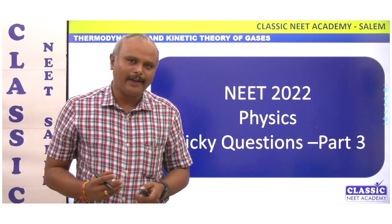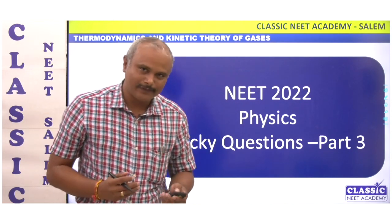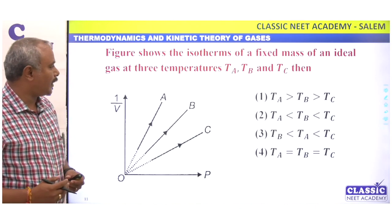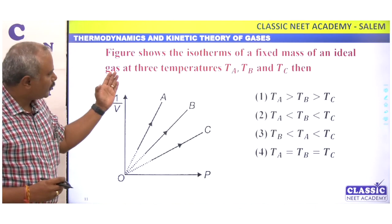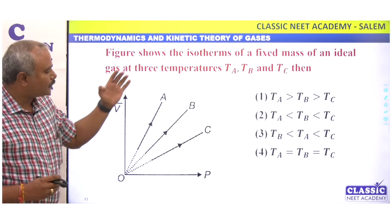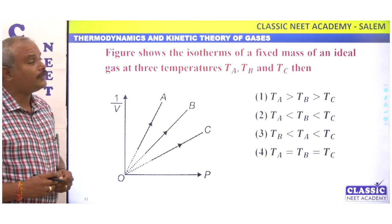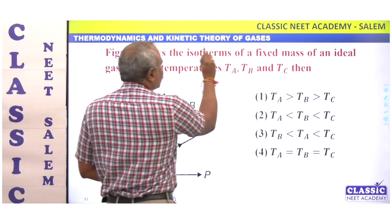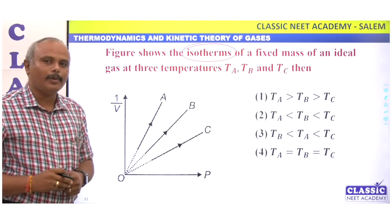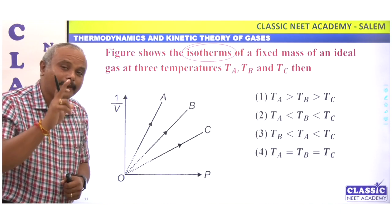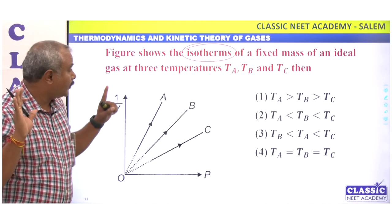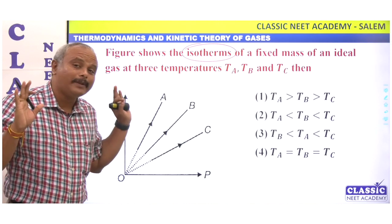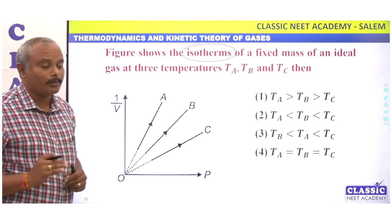Last year, this is a NEET question. Let's see — this is Thermodynamics and Kinetic Theory. The figure shows the isotherms. What is meant by isotherm? An isotherm is a line along which temperature is constant. That is called an isotherm.